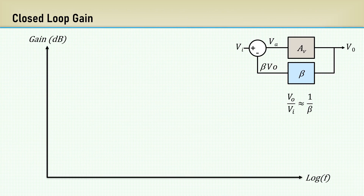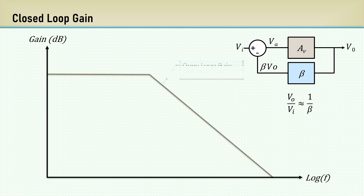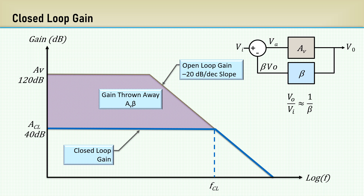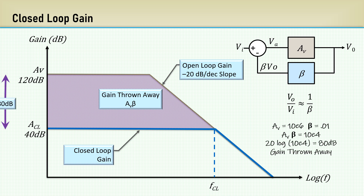Let's make a plot of the amplifier gain versus log frequency. Here is the large open loop gain at 120 dB. It falls off at a 20 dB per decade slope due to the dominant pole in the amplifier. When negative feedback is applied, the closed loop gain is lower — in this case 40 dB — and well controlled. The point where it meets the open loop gain slope is referred to as the closed loop frequency. The gain thrown away is A sub V multiplied by beta: a million multiplied by beta of 0.01 equals 10 to the fourth, and 20 log of 10 to the fourth is 80 dB of gain thrown away.